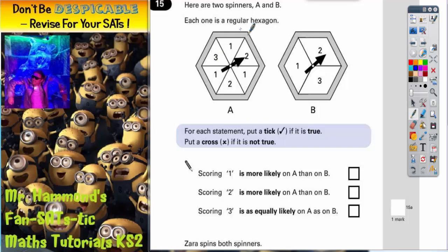Question 15. Here are two spinners A and B. Each one is a regular hexagon.